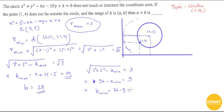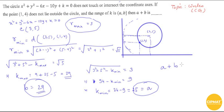So k_min = 34 - 9 = 25. Therefore a = 25 and b = 29, giving a + b = 25 + 29 = 54. The answer to this question is 54. I hope you understood — thank you very much for watching.